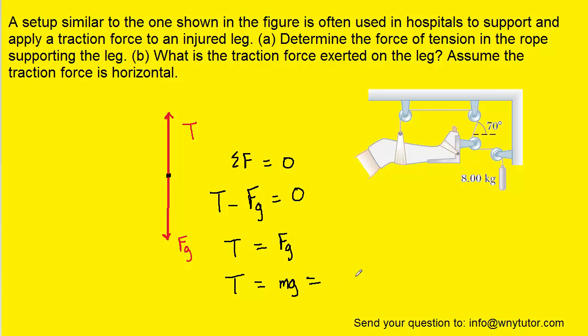The mass of the object was given as 8 kg, and g is going to be 9.8 meters per second squared. And when we compute this, we get approximately 78.4 newtons for the tension in the rope that's supporting the 8 kg object.